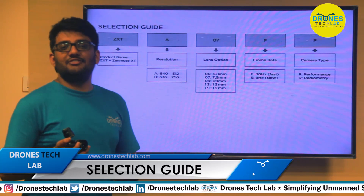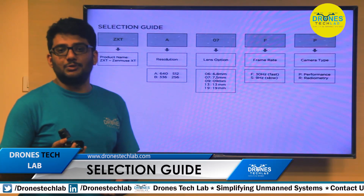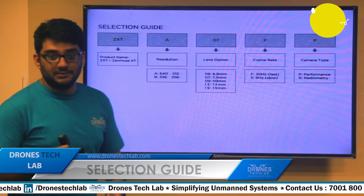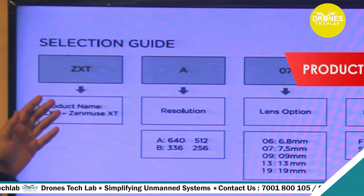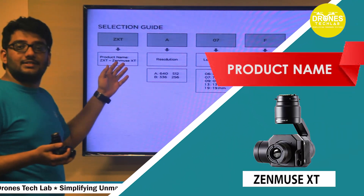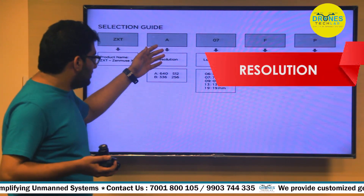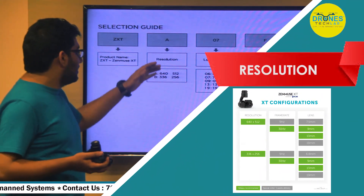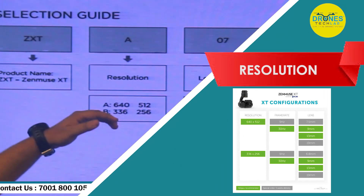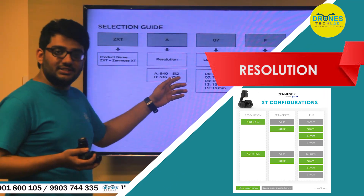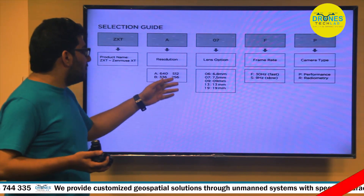Now let's see how to distinguish between the 16 different configurations of the Zenmuse XT thermal camera from its model number. The first three characters stand for the product mix, which is Zenmuse XT itself. The fourth character stands for resolution, which comes in two types: 'A' stands for 640×512 and 'B' stands for 336×256, which differ in image quality.